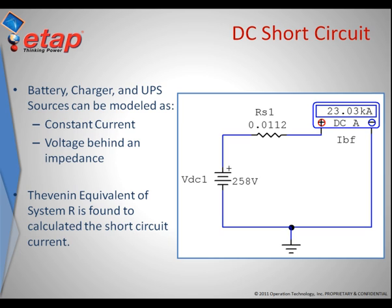These sources can be modeled as either constant current or voltage behind impedance sources. The typical modeling in DC short circuit calculations is to represent these sources as Thevenin equivalents using their equivalent resistance and internal voltage to determine the amount of short circuit to a fault. As can be seen in this slide, the available DC short circuit current for a fault in this circuit is 23.03 kilo amps, with a voltage source of 258 volts DC and a system impedance of 0.0112 ohms.